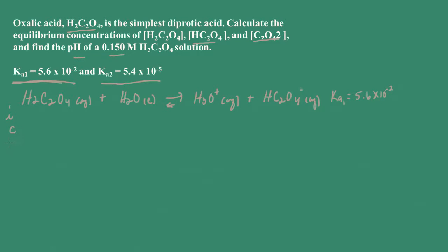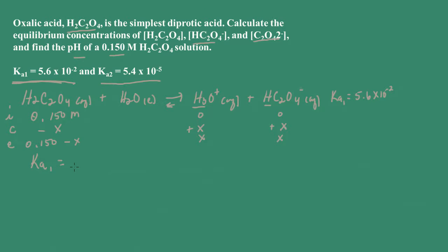Let's set up our ICE table — initial, change, and equilibrium concentration. Our initial concentration is 0.15 molar. We ignore the dissociation of water because that's going to be very small. The concentration decreases by X, and the amounts of hydronium ion and hydrogen oxalate ion each increase by X. At equilibrium, we have 0.15 minus X, X, and X.